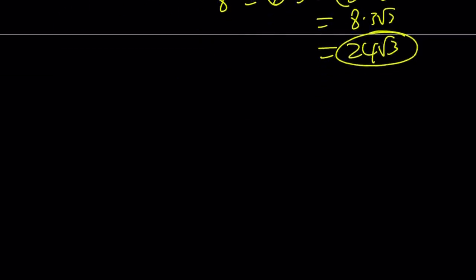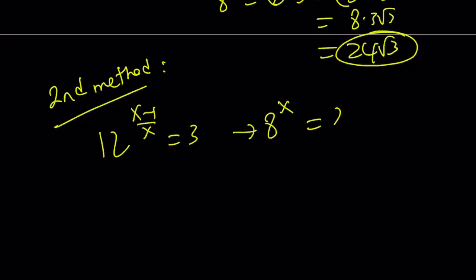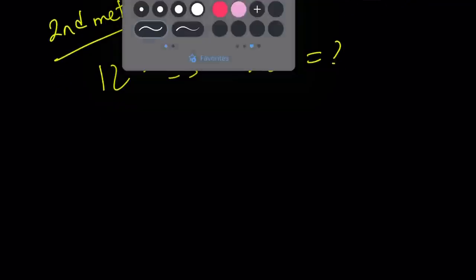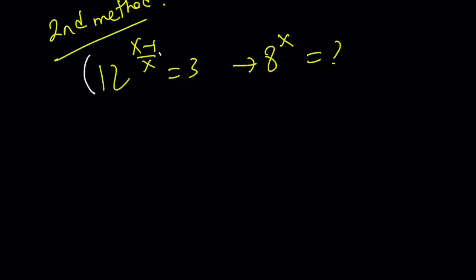That brings us to the end of the first method and the beginning of the second method. Let's talk about the second method. For the second method, we're going to do the following. Start off with the original problem. And then our goal is to find 8 to the power x, remember? So here's what I'm going to do. I'm going to raise both sides to the power x. Raise to the power x. And these two x's are going to cancel out, which is what's nice about this. 12 to the power x minus 1 equals 3 to the power x.